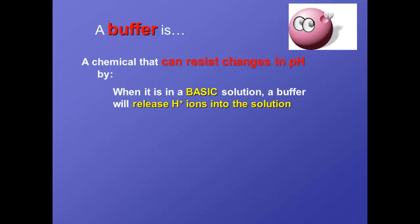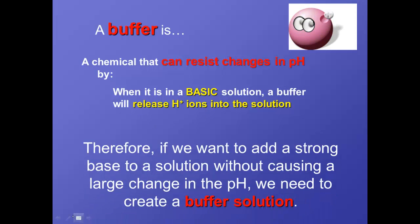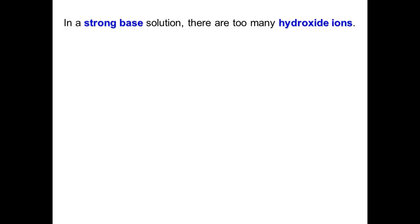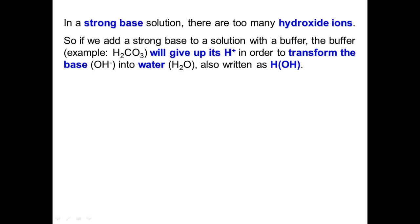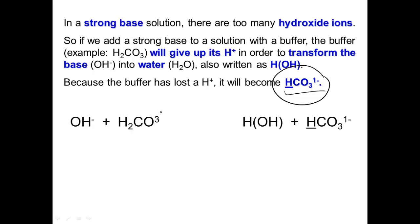Now, if you don't want that to happen, you need to add a buffer because buffers resist those changes in pH. So if you have a basic solution, what a buffer will do is it will give hydrogen ions to the base, and what happens is when you give hydrogen ions to the base, which is an OH⁻, a hydroxide ion, the hydrogen and the hydroxide ion will make water, and we know that water is neutral. So a buffer will give out hydrogen ions to a base to turn it into water and make sure that the solution doesn't change the pH.